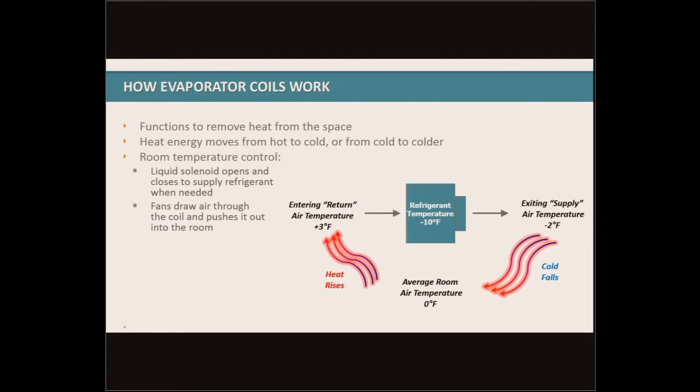To start out, I want to go back to the basics on how evaporator coils actually work. Evaporators function to remove heat from the space. In particular, heat moves from hot to cold, or in the case of evaporators in refrigerated spaces, it moves from cold to colder locations. The evaporators are controlled through either temperature sensors or through thermostats. The basic operation is that they open and close the refrigeration solenoid valve to allow refrigeration to enter the evaporator coil when refrigeration is needed.